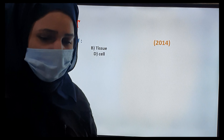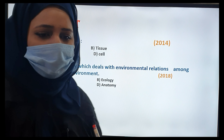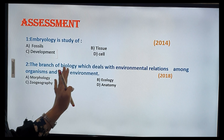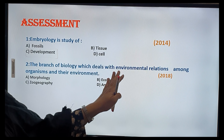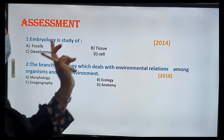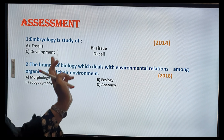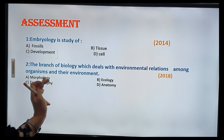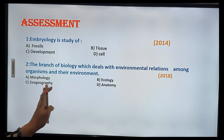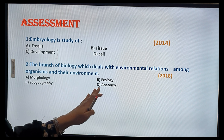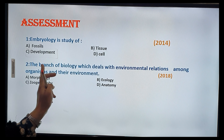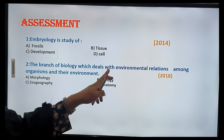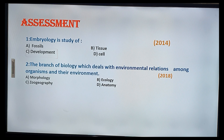The next question: the branch of biology that deals with the environmental relations among organisms and the environment. The options are morphology, ecology, zoogeography, or anatomy. The branch of biology that deals with environmental relationships is ecology.